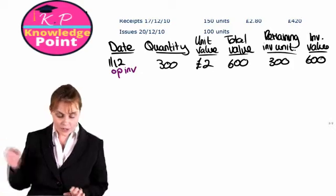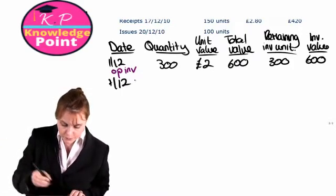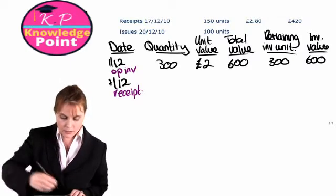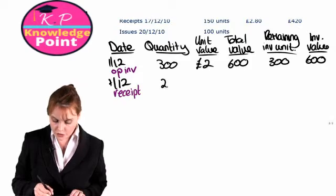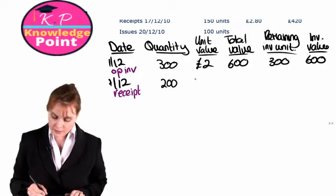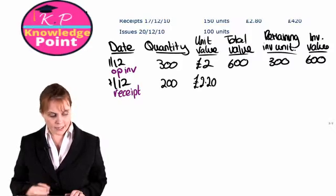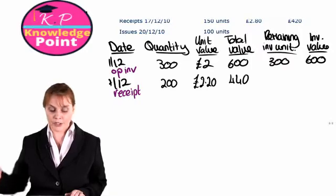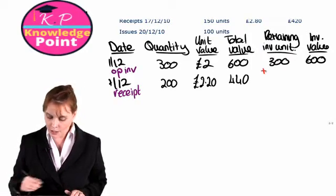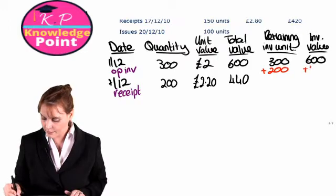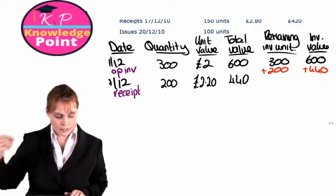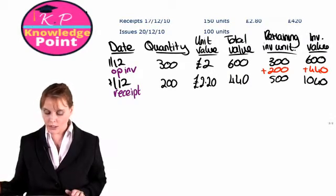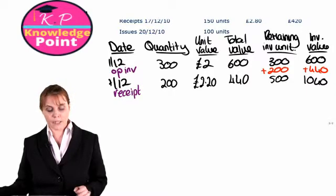Our next transaction is on the 7th of December — we have a receipt. We receive or purchase 200 units with a unit value of £2.20. So the total value of the transaction is £440. We add that on to our existing inventory, and now in our warehouse we have 500 units with a total value of £1,040.